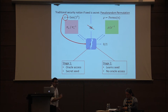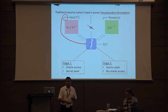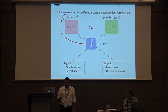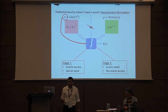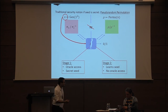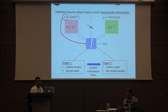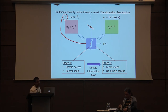The first stage adversary still plays the PRP game, that is with oracle access to one of these oracles, and the seed is kept secret. The second stage adversary learns the seed but has no oracle access. We allow some information flow between these two stages. This paradigm for defining security was first seen in the UCE framework for seeded hash functions.